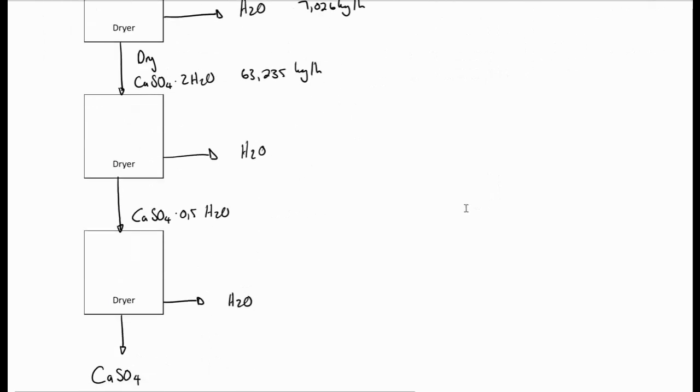In the next step, that calcium sulfate dihydrate is put into another dryer, where we remove the water of crystallization, only a fraction of it, so that we end up with calcium sulfate hemihydrate. Now, there are several ways to do this. I prefer doing it this way, by saying that the molar mass of the calcium sulfate hemihydrate over the molar mass of the calcium sulfate dihydrate must be equal to the mass of calcium sulfate hemihydrate in the stream over the mass of calcium sulfate dihydrate in the stream. And from this, we can get the mass of calcium sulfate hemihydrate in the stream to be 53.301 kilograms per hour.